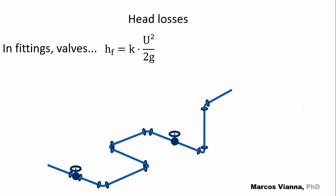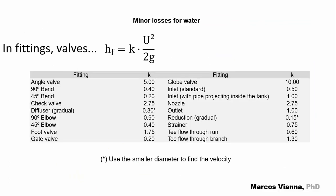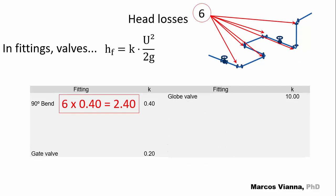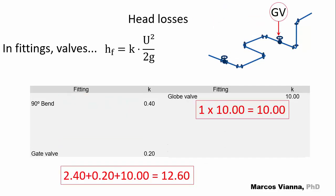It's not over yet. We must calculate the minor losses using the values of this table. We just have to find the fittings and valves that appear in our circuit, such as these ones. We have six 90 degrees bends, one gate valve and one globe valve. The sum of the coefficients is 12.60.